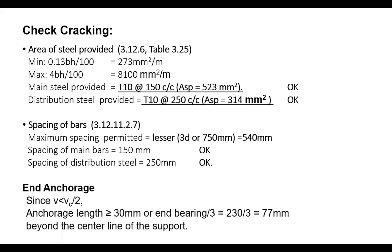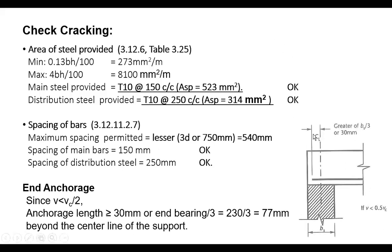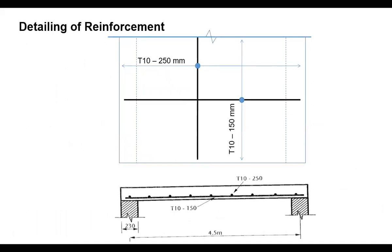For anchorage, since v < v_c/2, the anchorage length beyond the centre line of the support is the greater of 30 mm or b_s/3. With b_s/3 = 230/3 ≈ 77 mm, the anchorage length is 77 mm behind the centre line of the support.